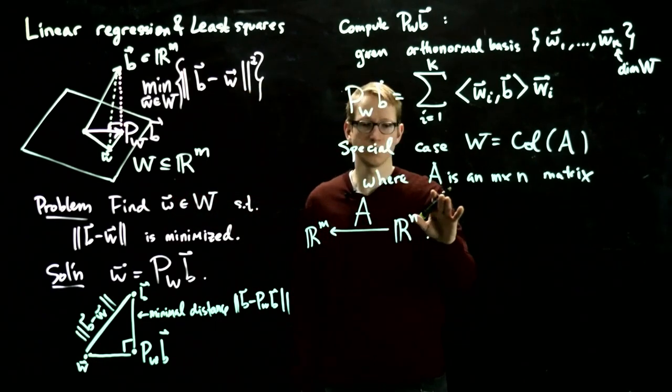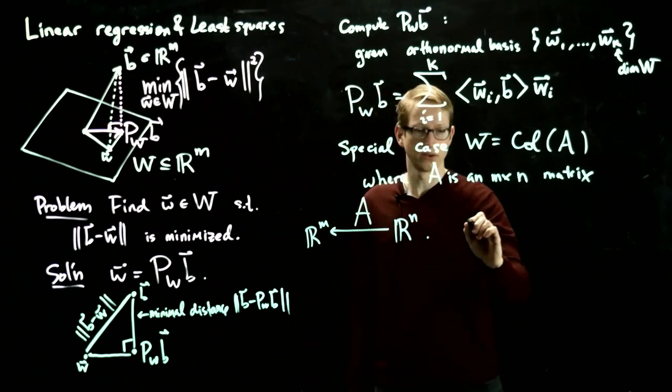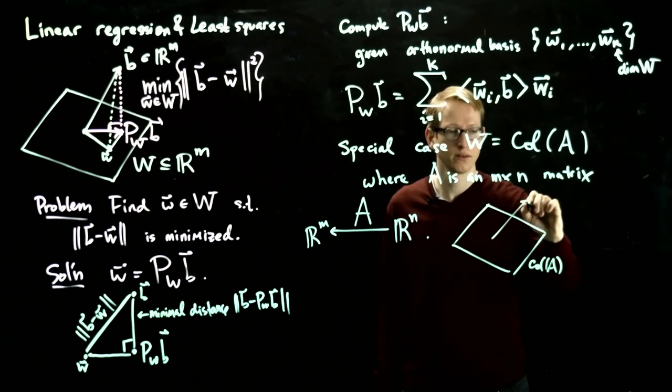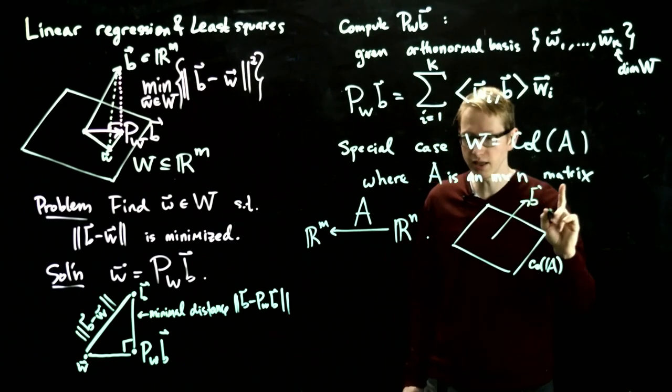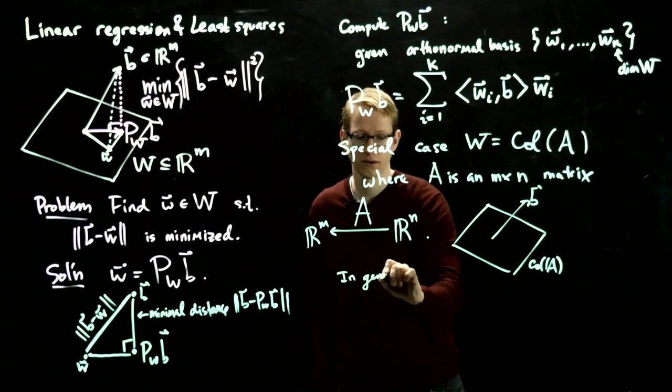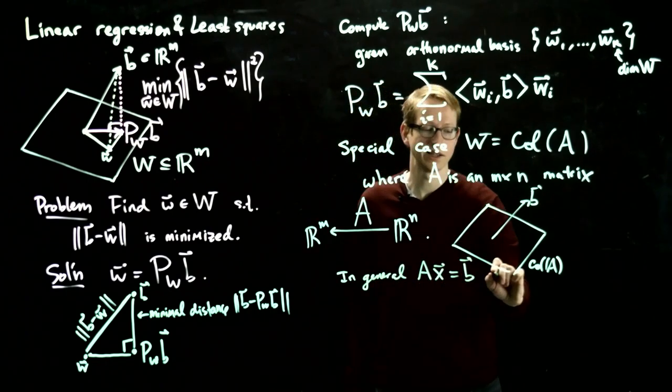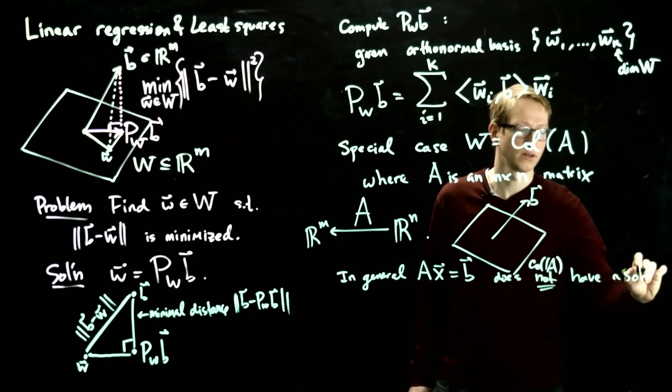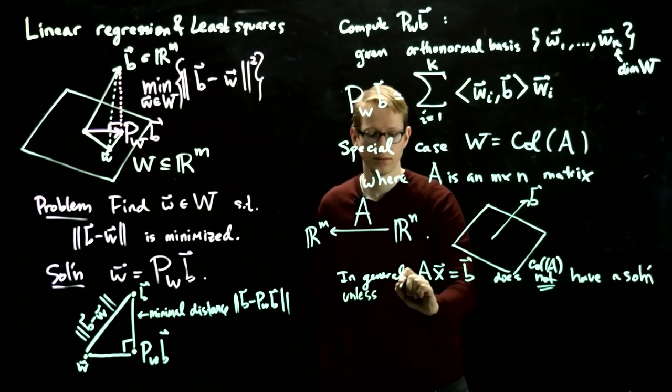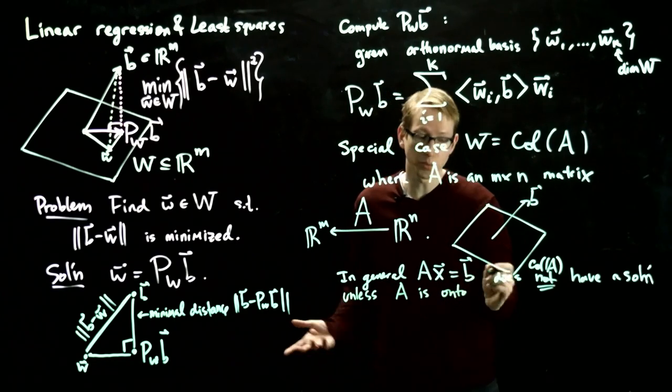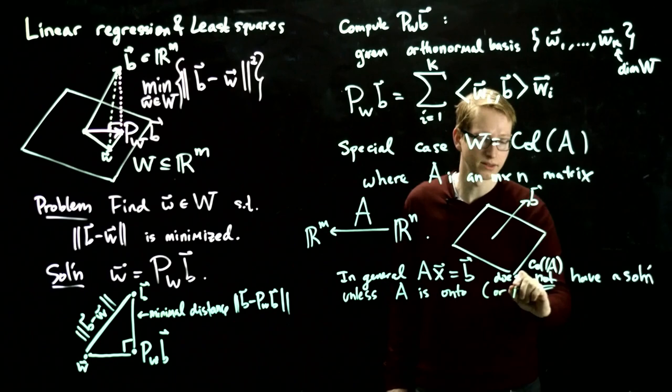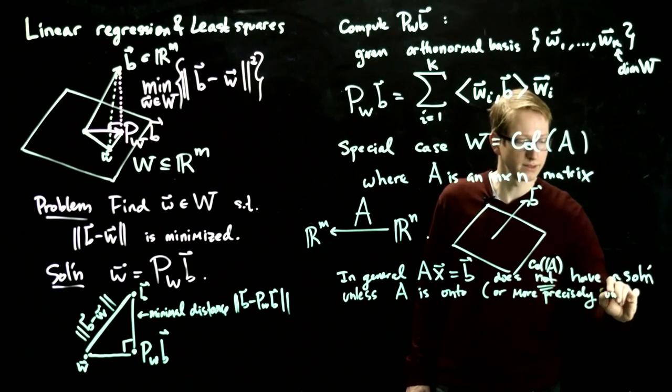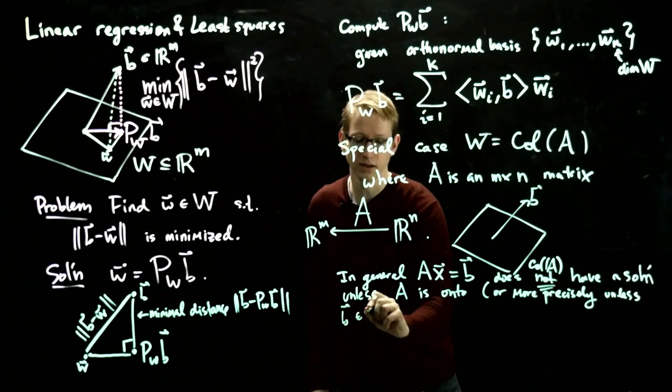In general, when we look at this problem and we're given a vector b, so now let's suppose that this subspace is the column space of A, and we have some vector b that's not necessarily in the column space, what this means is that the linear system Ax = b does not have a solution, unless A is onto, or more precisely, unless the vector b is in the column space of A.